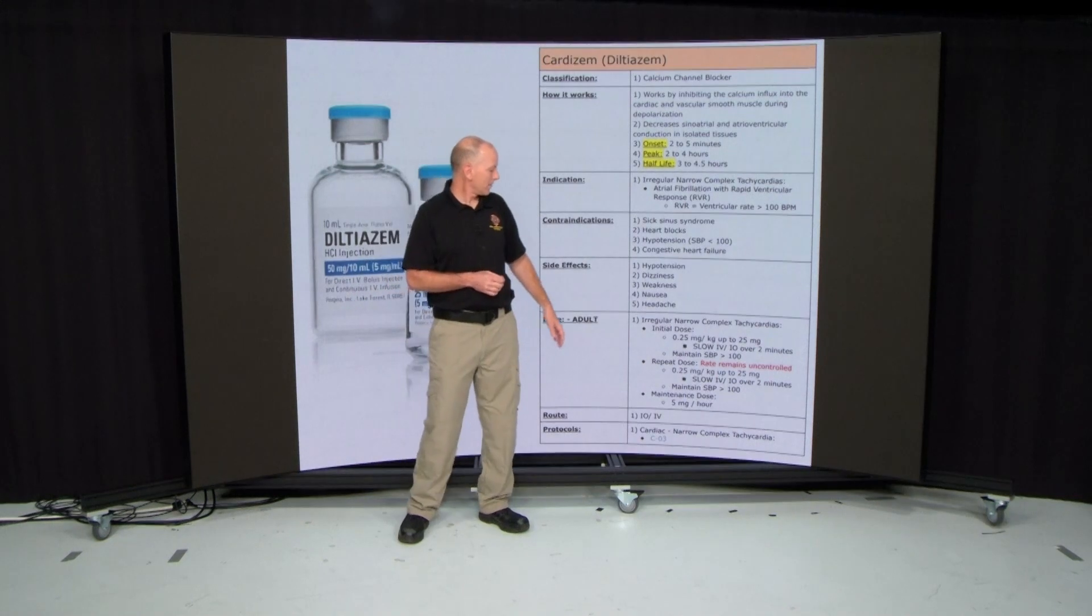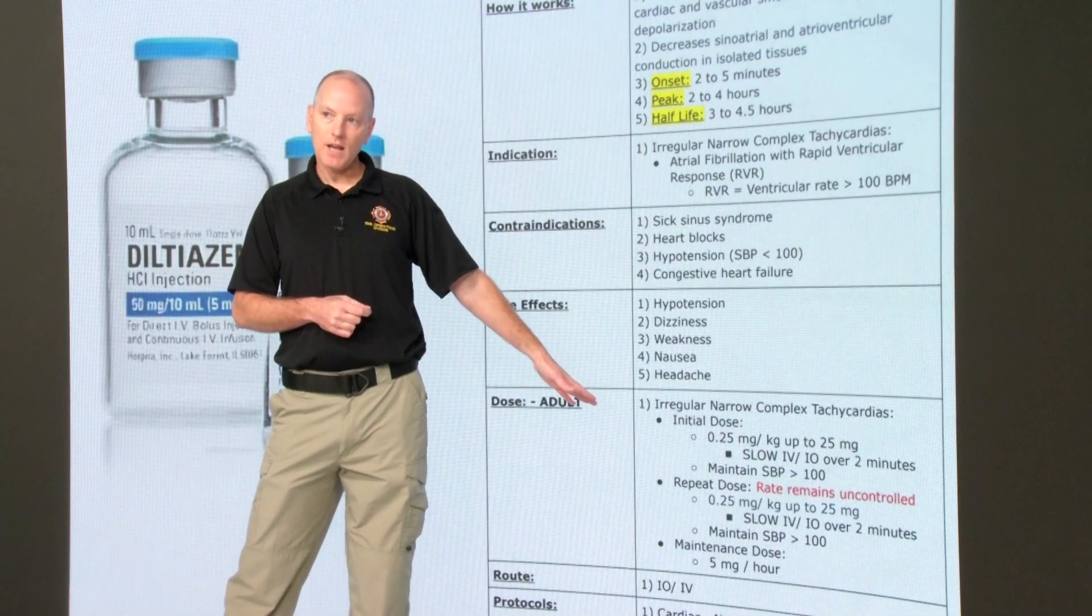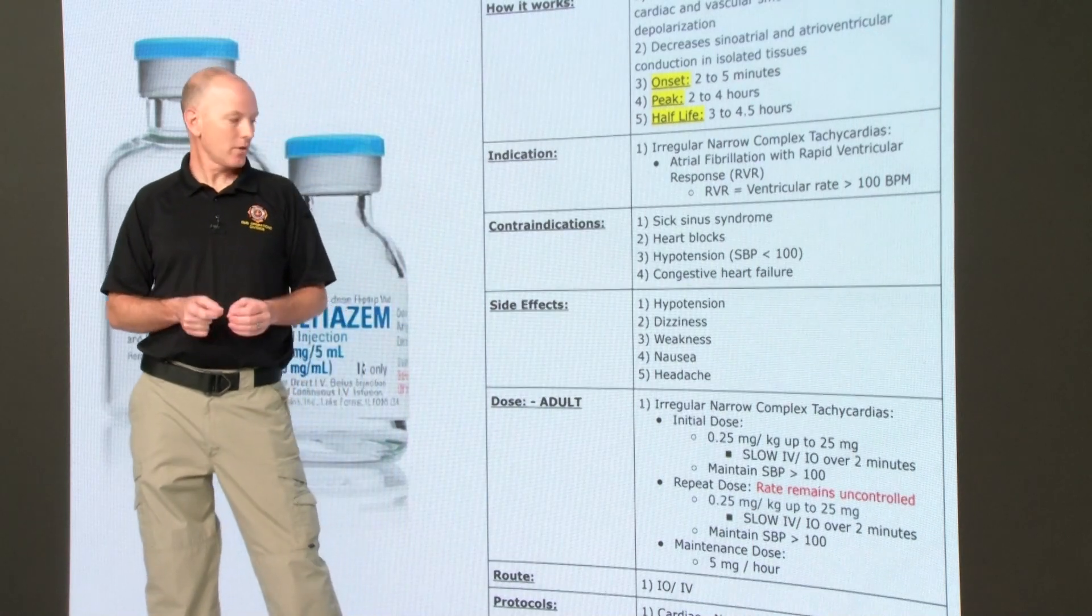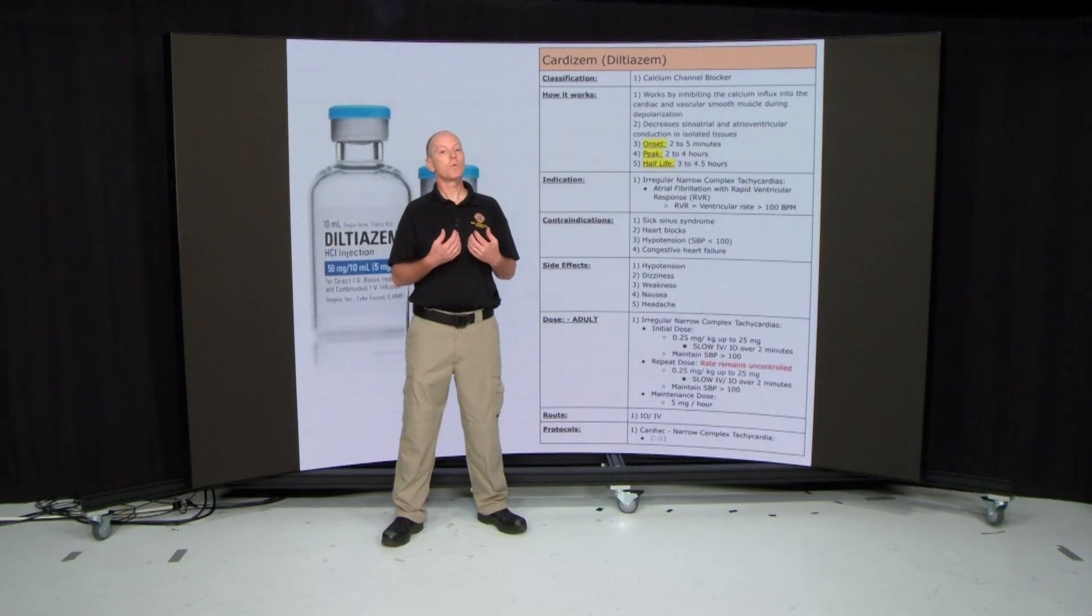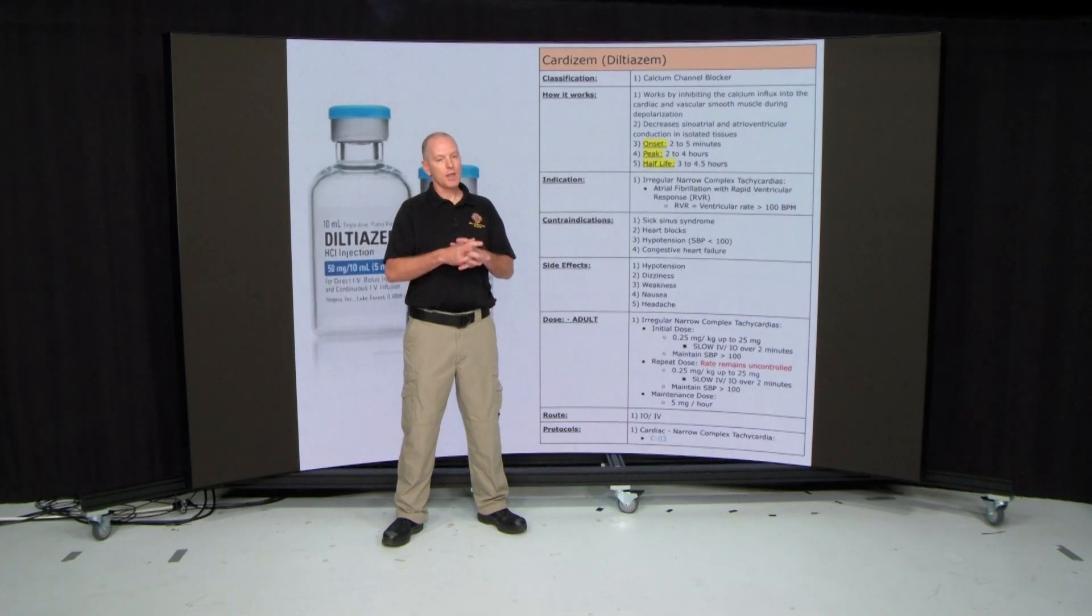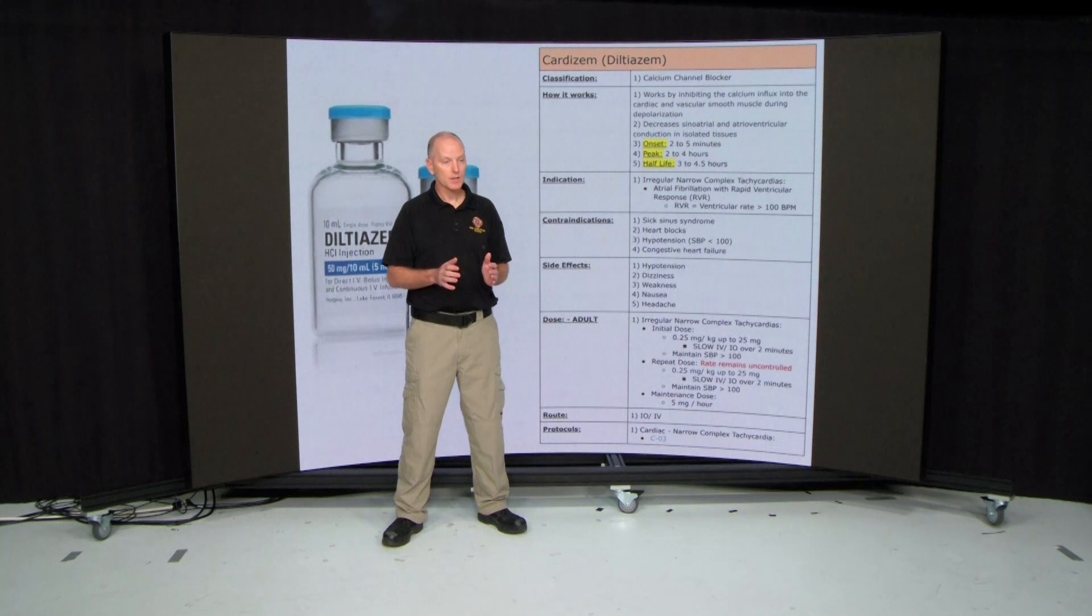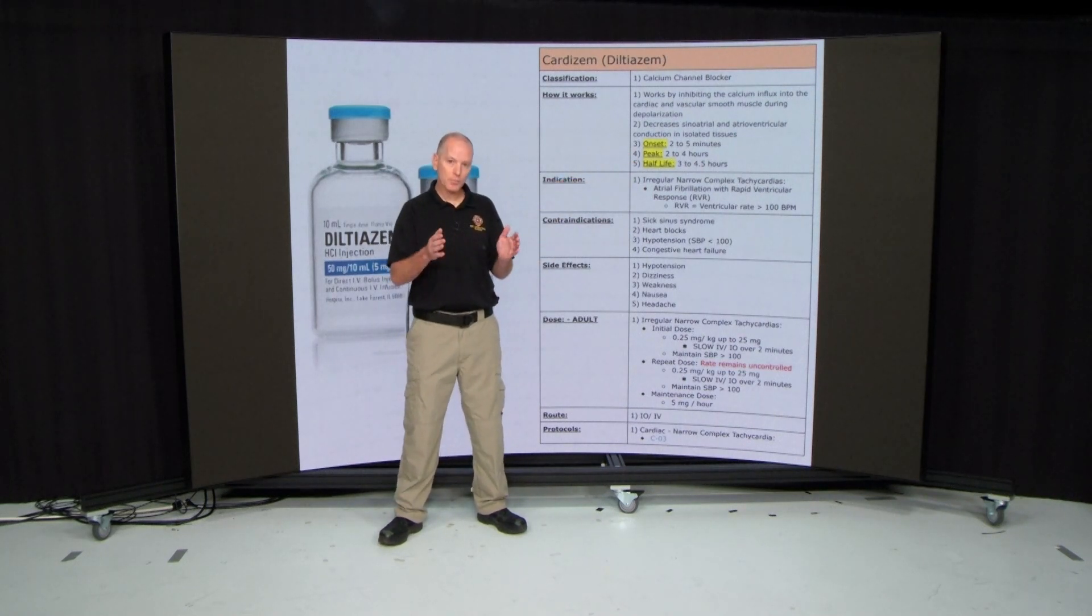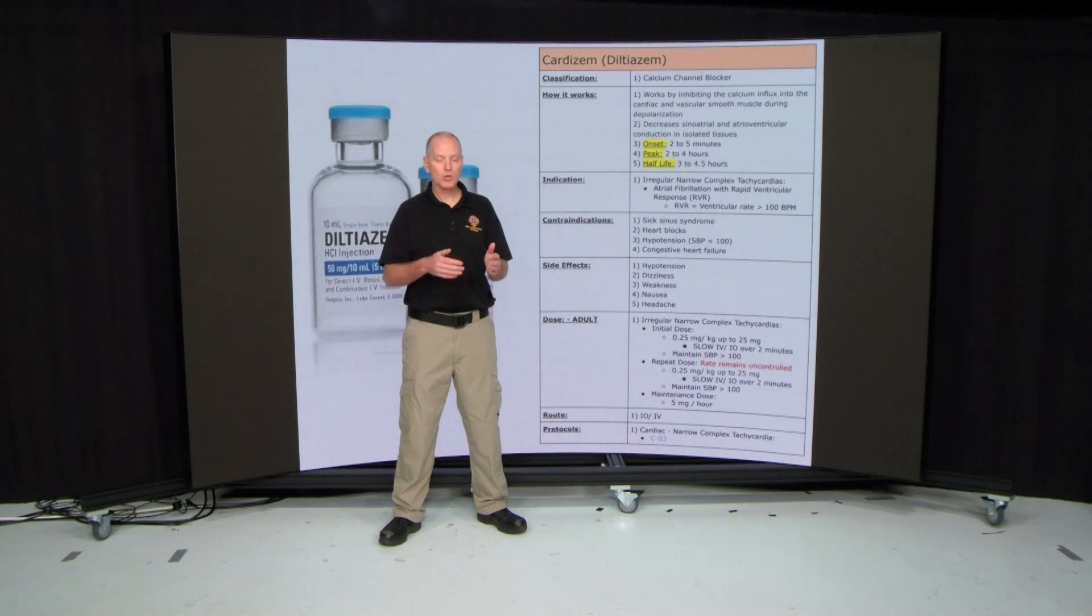So how are we going to administer this? If we have that afib with RVR, our initial dose is 0.25 milligrams per kilogram up to 25 milligrams. This has got to be pushed very slow, IV or IO, over two minutes. Remember the onset is two to five minutes. So by the time you finish pushing that over two minutes, you should hopefully have some conversion of that afib with RVR.